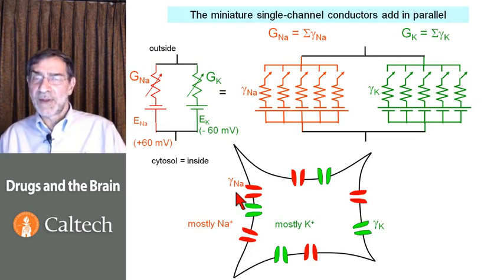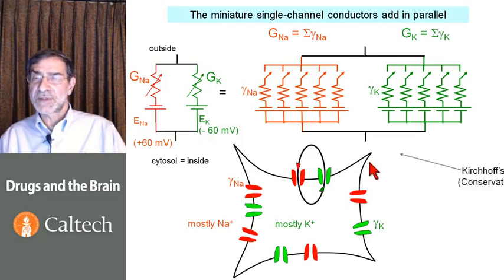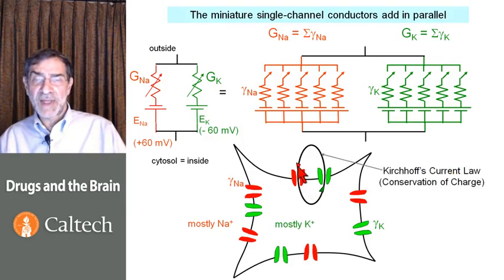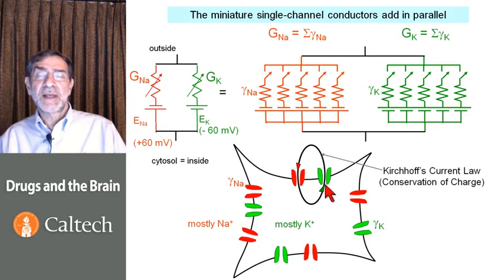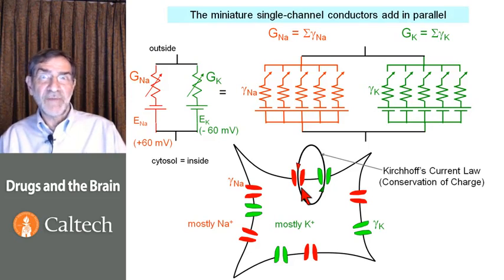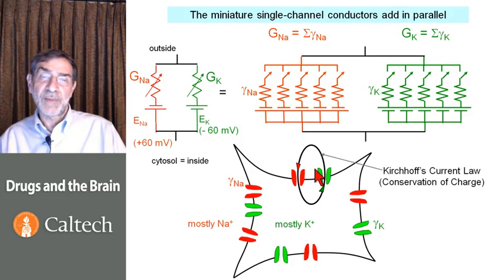We make the point of conservation of charge, or Kirchhoff's current law. We say that a charge that flows in through a sodium channel must be balanced by flowing out through a potassium channel. This is actually fairly subtle because the ion that's carrying the current outward is a potassium ion, and the ion that's carrying the current inward is a sodium ion. The cell eventually needs to exert some energy to put those sodium ions back where they belong and those potassium ions back where they belong.